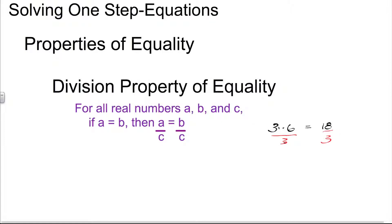Because 3 times 6 divided by 3, the 3s divide out, leaving us with a 6. 18 divided by 3 gives us 6. And we can see the division property of equality at work here: whatever we do to one side of the equation, we have to do to the other side. We're going to see how the division property of equality works in the coming examples.